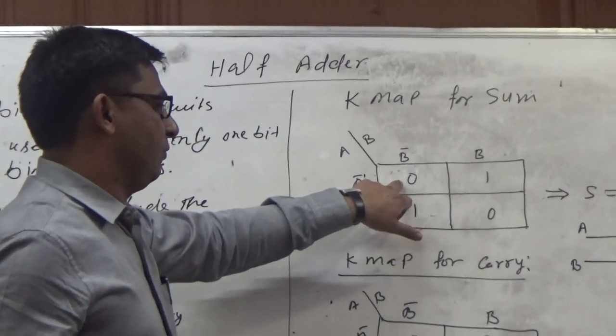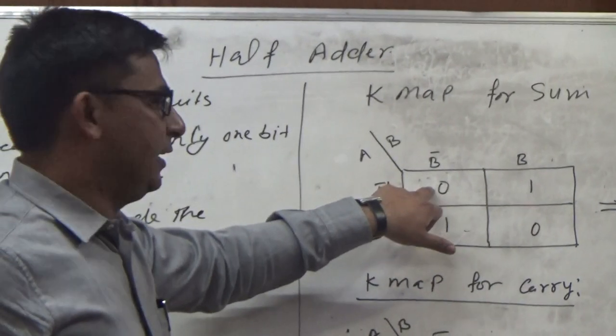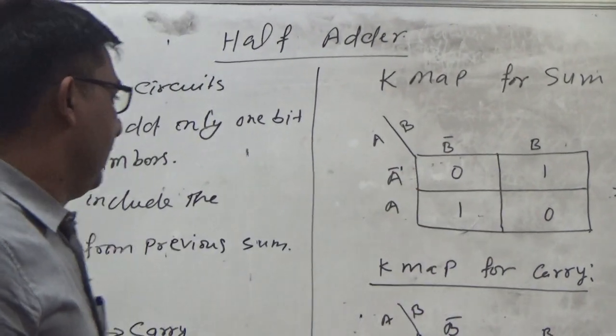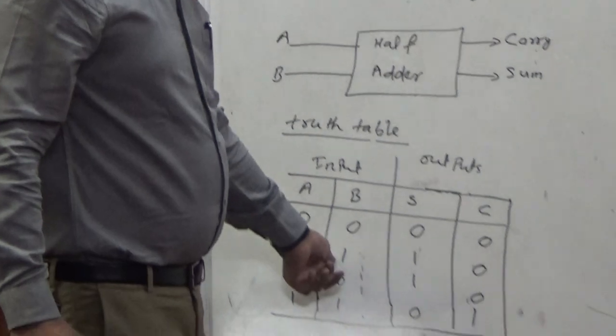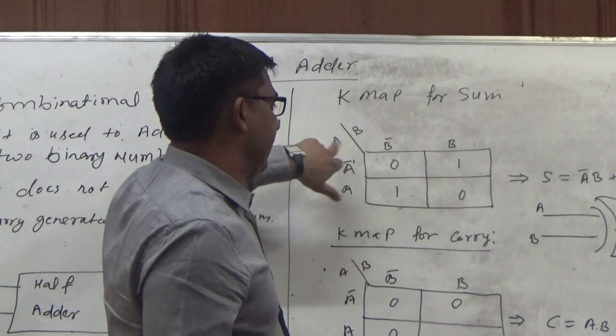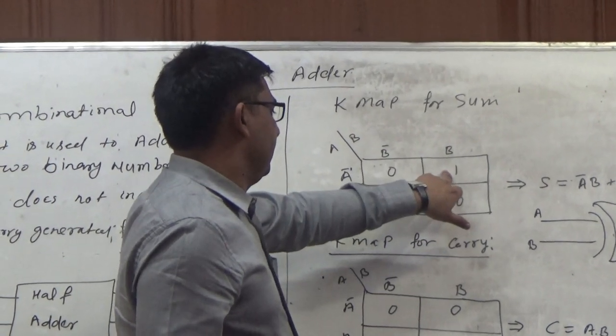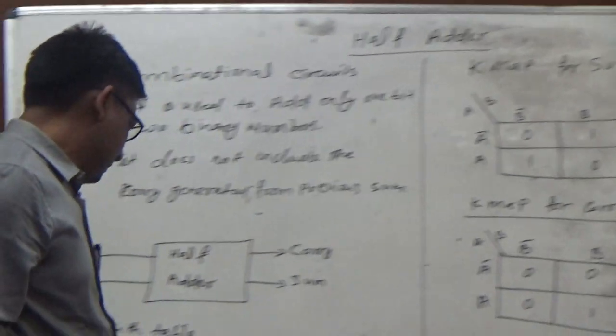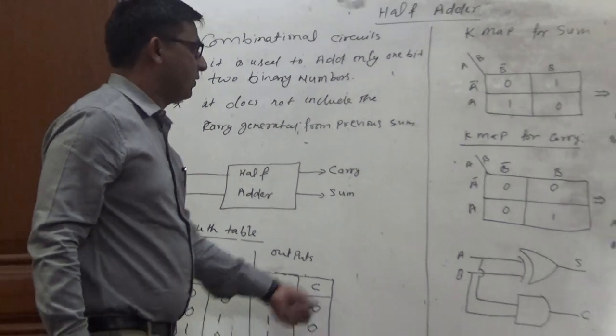The second one is 0 and 1. If we are looking from here, A is complement and B is high, and the value of sum is 1, so I feed 1 value here in this side.